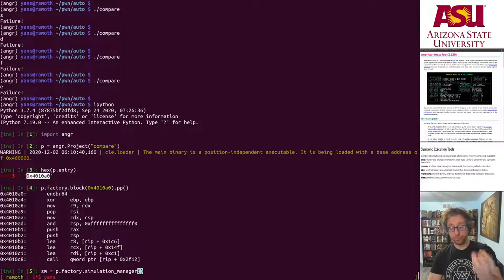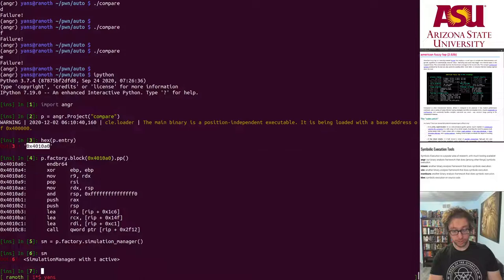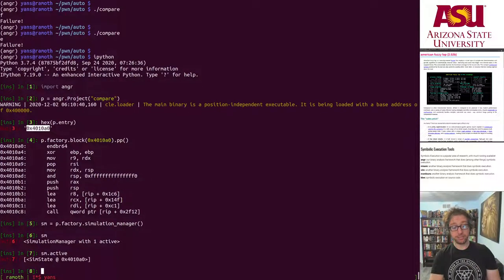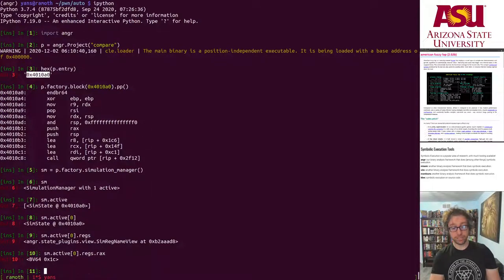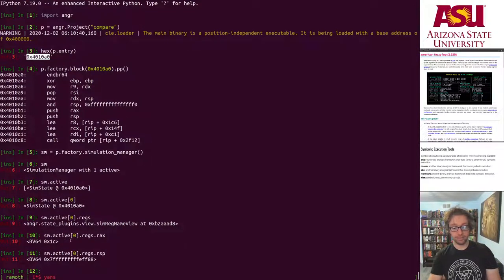And various other things. One thing that we can do is create what is called a simulation manager. This is that emulator, this is the emulator that we're talking about, or the interface to angle's emulator. It starts out with an active state. This is a state that has stuff like registers. So these are the registers that start out with the values that they start out with when the program begins executing.